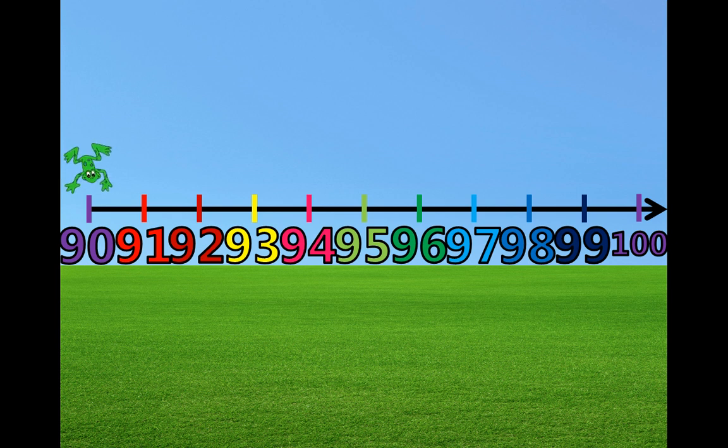This is Froggy the Frog. He likes to jump around on the number line. He is going to help us count from 90 to 100 on the number line. You can help him count too. When he jumps, you can say the number with us.